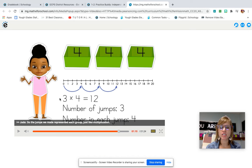Remember that first number in a multiplication equation tells you how many groups you have. Three, three groups, three jumps.